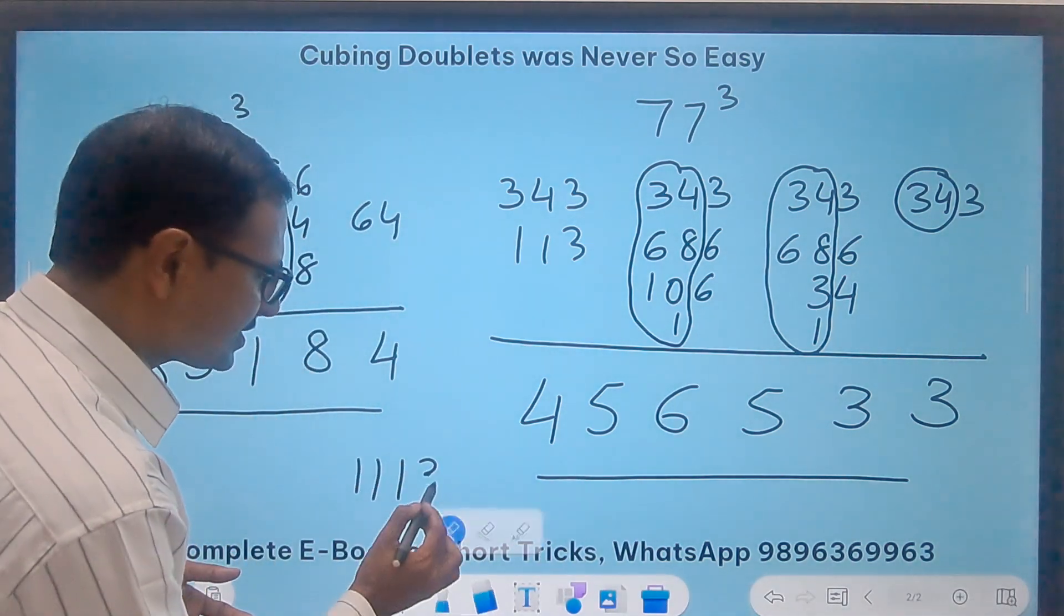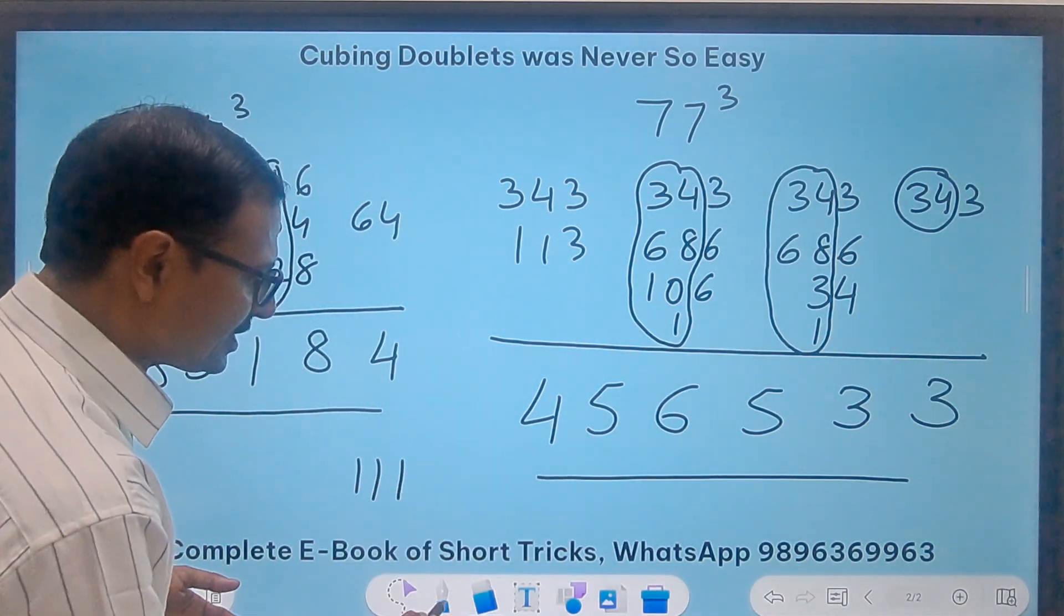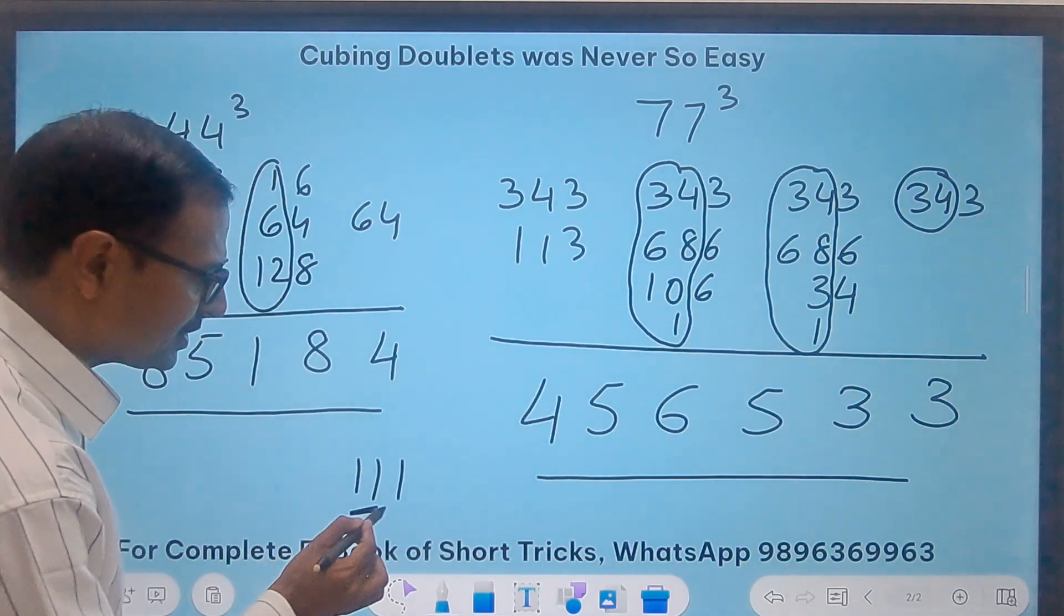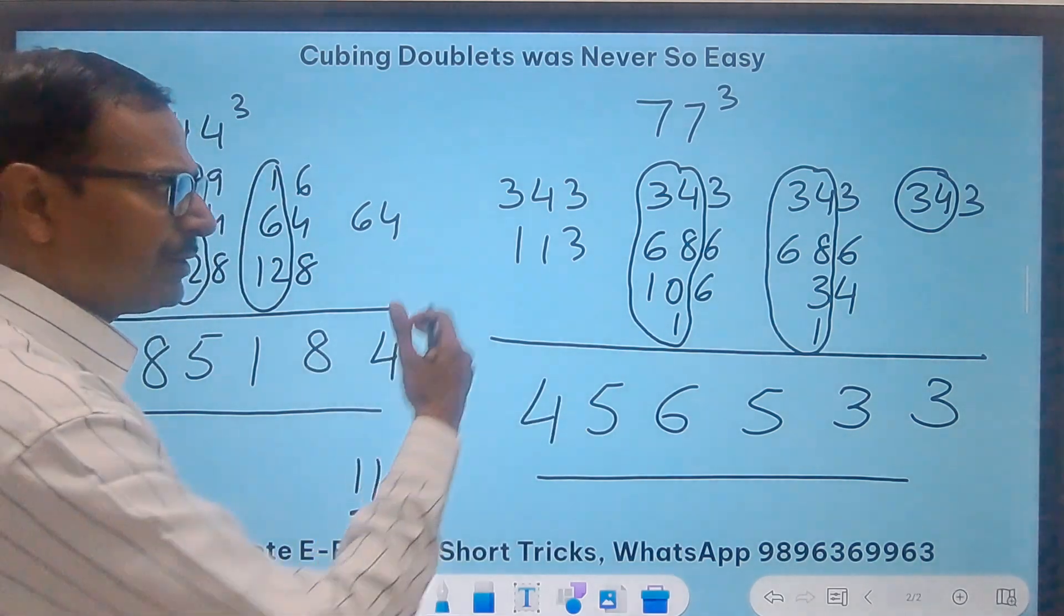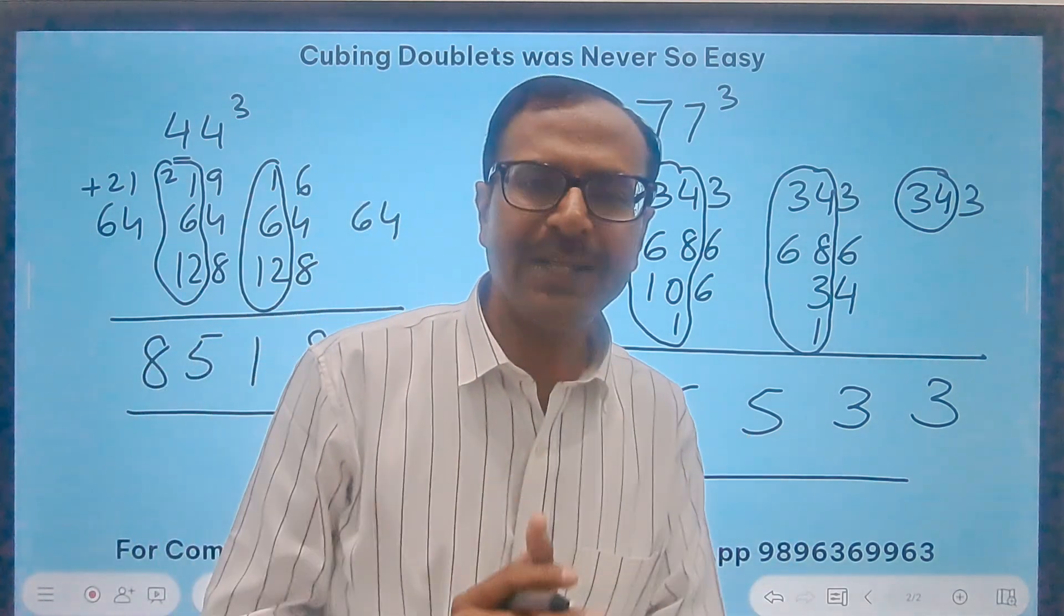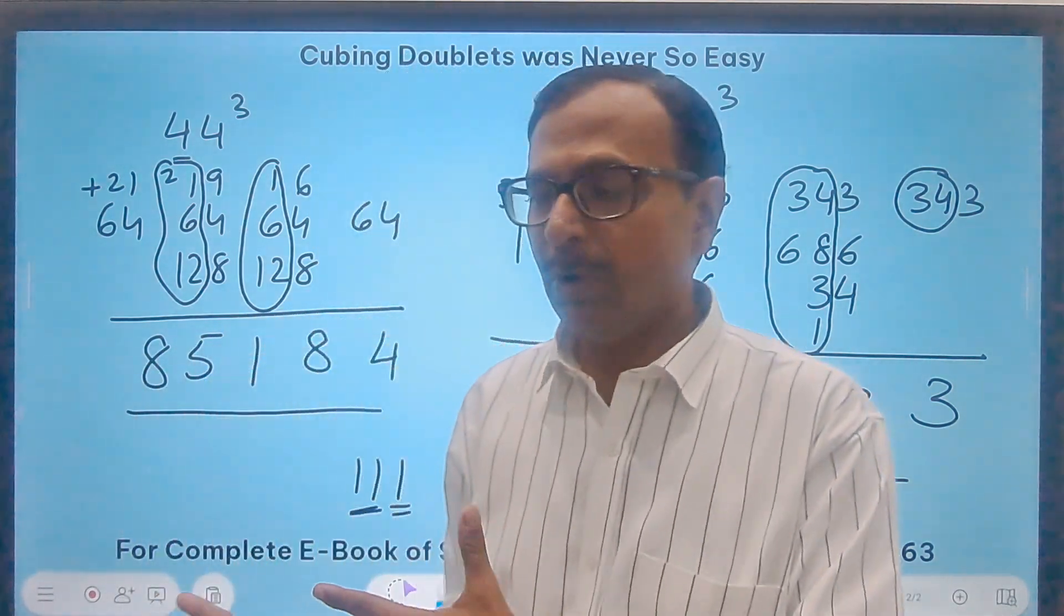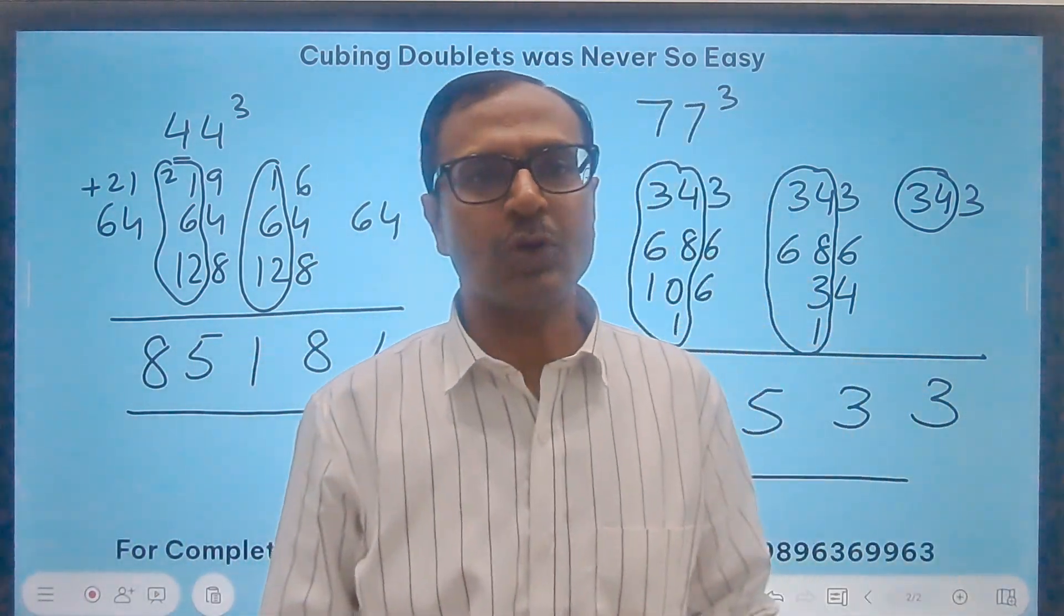If I have to do this, what will I do? I will just take 11 as one of the numbers and 1 as the other number. And perform the same thing. Just try using the identity A plus B whole cube. You will be able to cube triplets also.